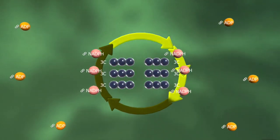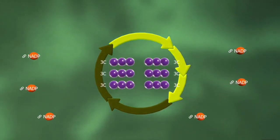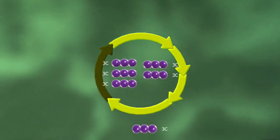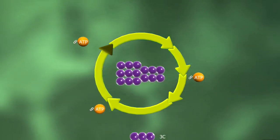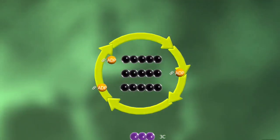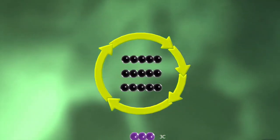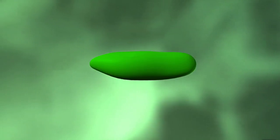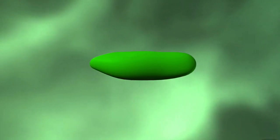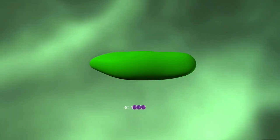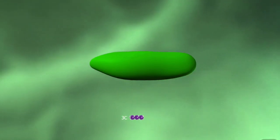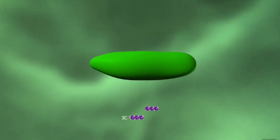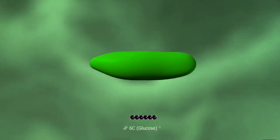One of these glyceraldehyde 3-phosphate molecules quits the cycle, while the others convert back to three 5-carbon sugar molecules using three ATPs, and the cycle starts all over again. By using ATP and NADPH produced in the light phase, one 3-carbon molecule is produced per cycle. Two cycles produce two 3-carbon molecules, which attach and form a 6-carbon glucose molecule. The plant uses glucose in its further metabolic processes for starch synthesis, or in its digestive processes for the production of ATP.